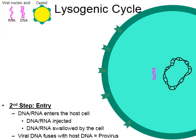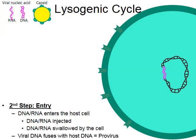Enzymes will break open the host cell's genome, and that allows the viral DNA to bond with and fuse with the host cell DNA. This combination — part cell DNA in black and part virus DNA in purple — is what is called a provirus. This occurs during the entry stage of the lysogenic cycle.